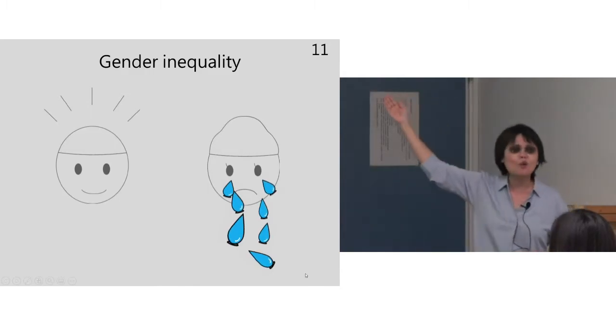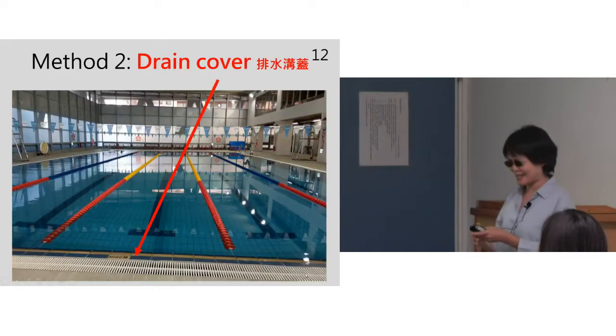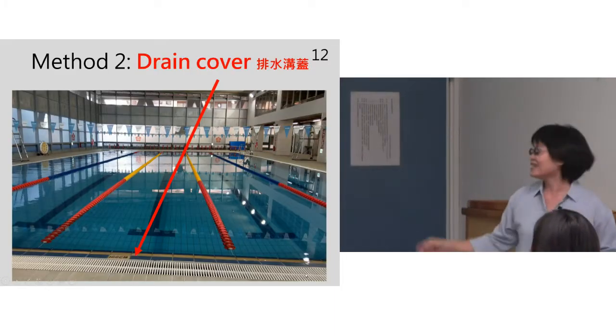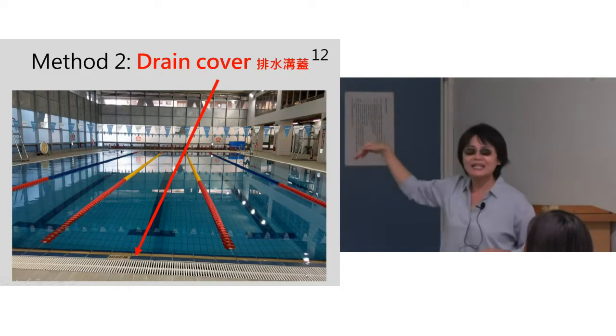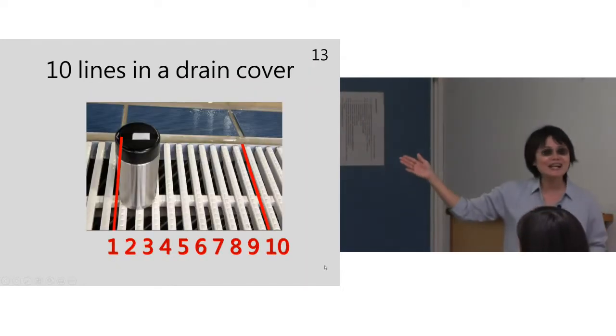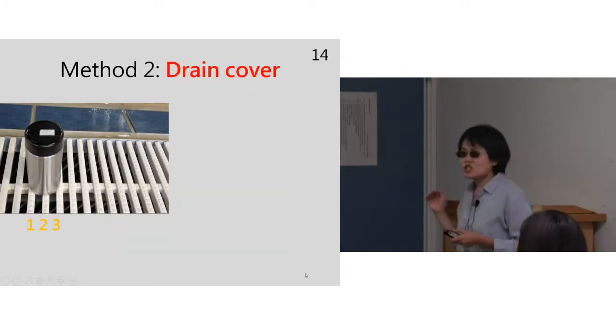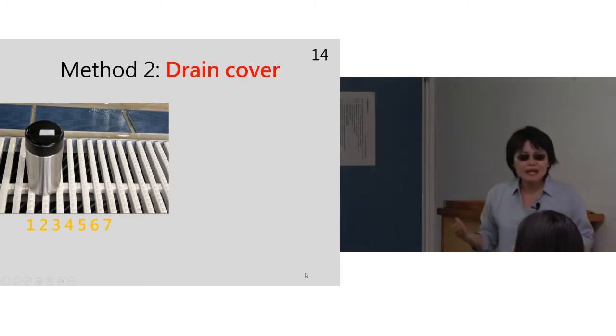Method two: drain cover. These are the drain covers on the deck along the pool. Each cover has ten lines like this. When I started swimming as a beginner, I was very weak and very slow.